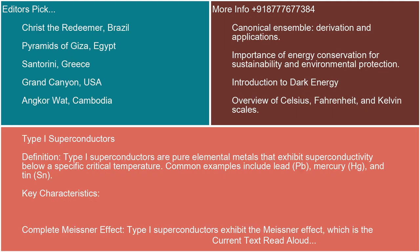Type I superconductors — definition. Type I superconductors are pure elemental metals that exhibit superconductivity below a specific critical temperature. Common examples include lead (Pb), mercury (Hg), and tin (Sn).